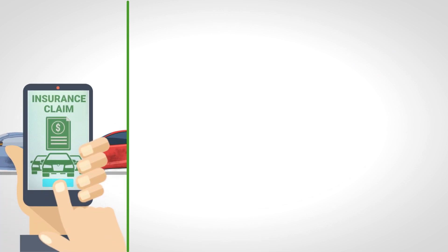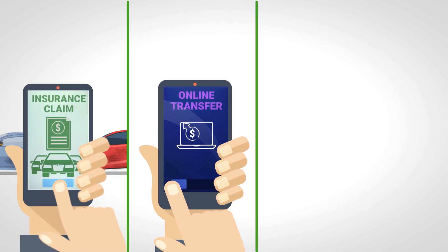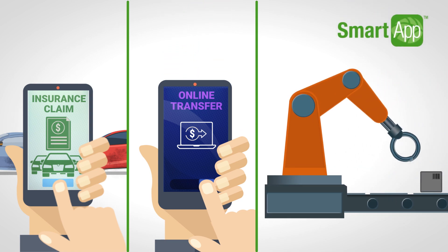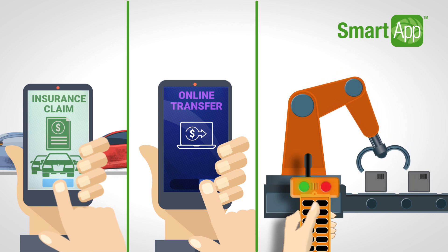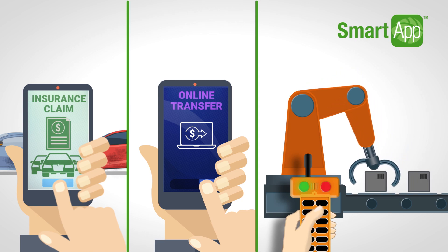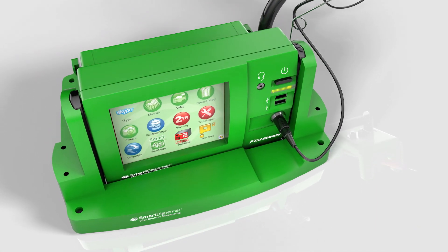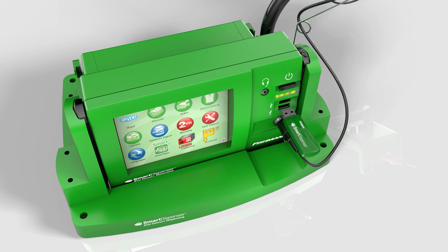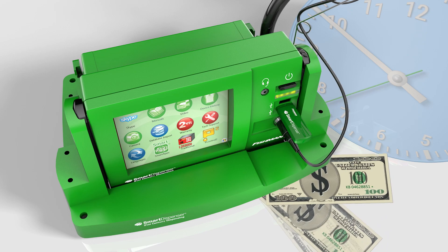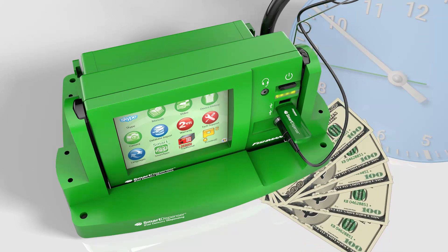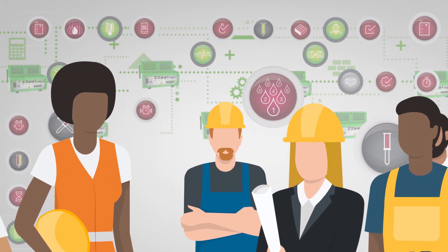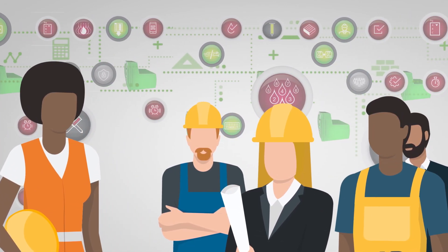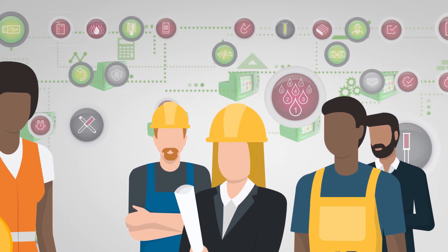Just as insurance apps speed up the accident claim process and banking apps eliminate trips to the bank, smart apps turn the customization of manufacturing equipment from a multiple day procedure handled by a highly degreed engineer using a programmable logic computer to a simple download and install made by a production worker. It's fast and easy. Plus, smart apps keep saving you time and money once they're installed because they help extend the life of your smart dispenser. Ideas for new smart apps are being suggested by members of the air-free community every day to reduce human error, boost productivity, and increase security.